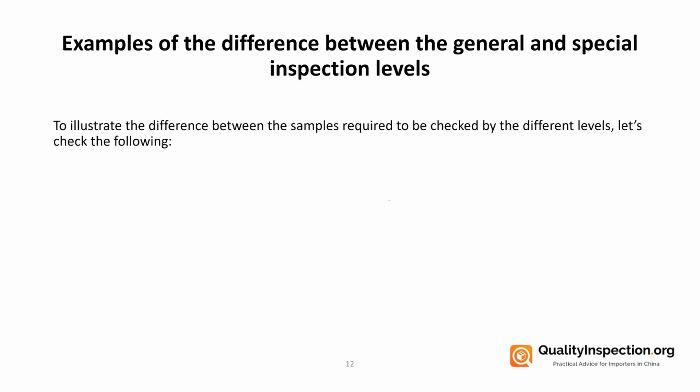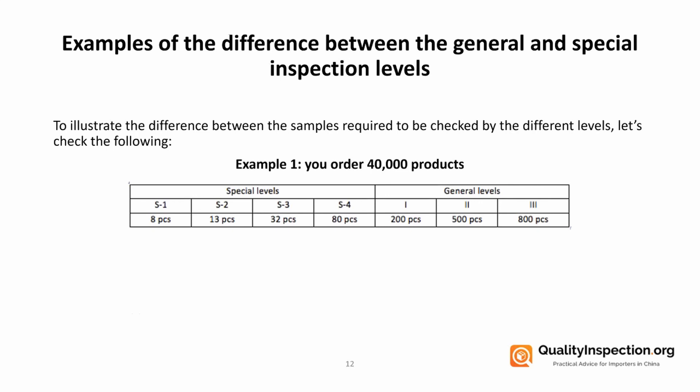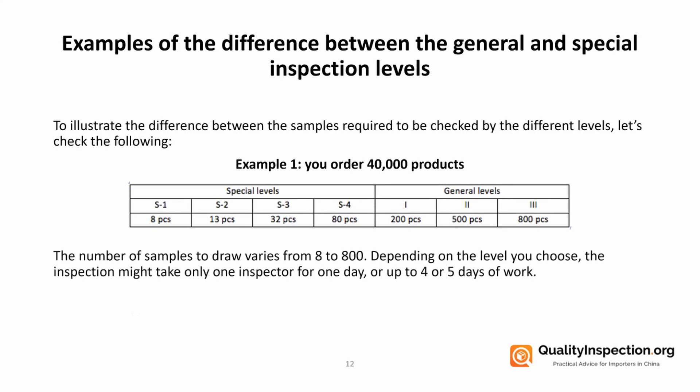A good way to show the difference between general and special inspection levels is to look at the tables again, illustrating the difference on this example of a quite large lot of 40,000 products. You can see that the general levels are suggesting that we need to check quite a large sample, whereas the special inspection levels on the left only require quite small samples to be checked. This is quite important because the impact on your quality inspection work is quite high — depending on the level you choose, the inspection could take, using the special levels, an inspector only about one day, or almost up to an entire week using the general levels on such a large lot.